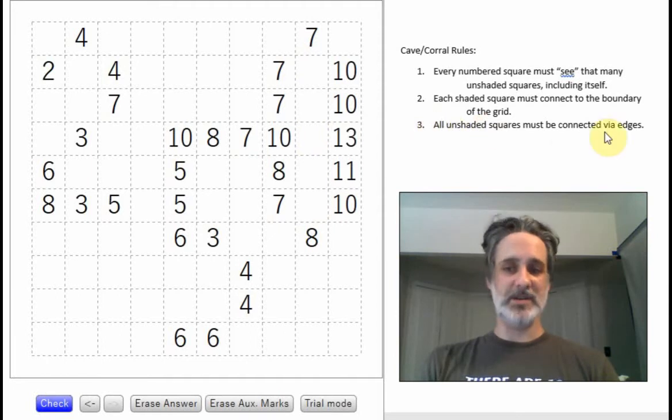Number three, all unshaded squares must be connected via edges. So we can't have all shading going down that way. That's just not going to work. So let's erase that.